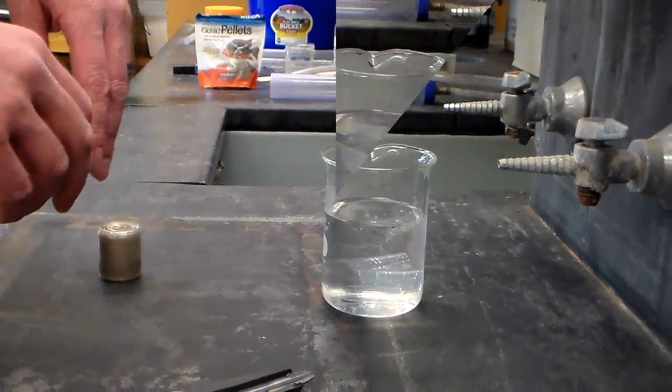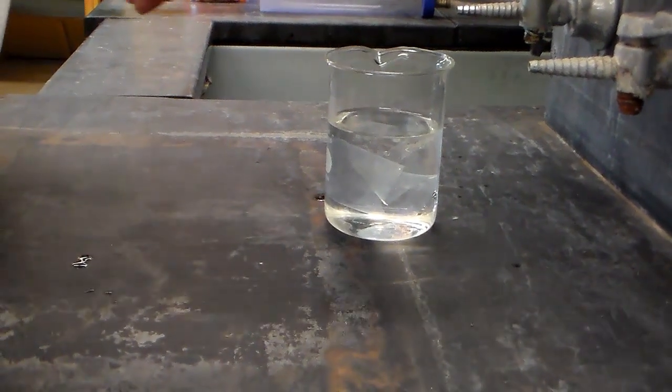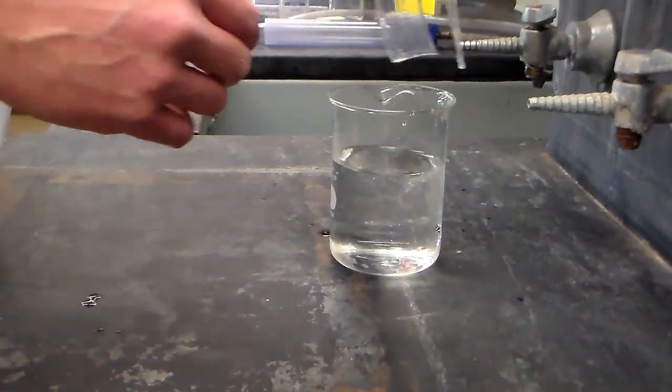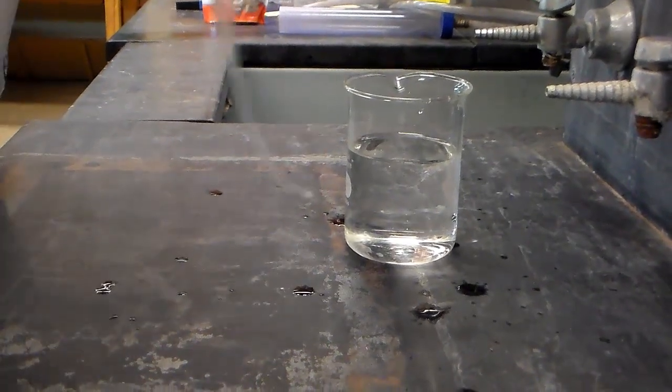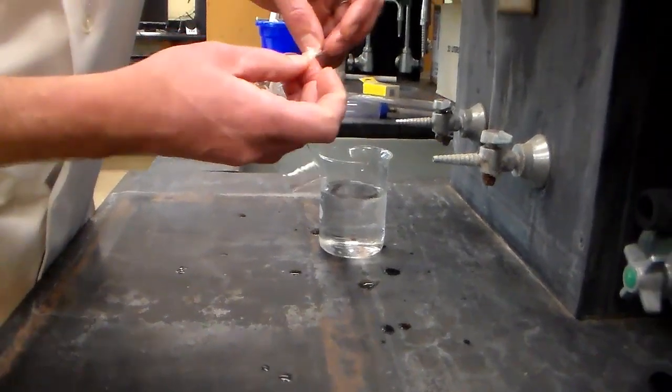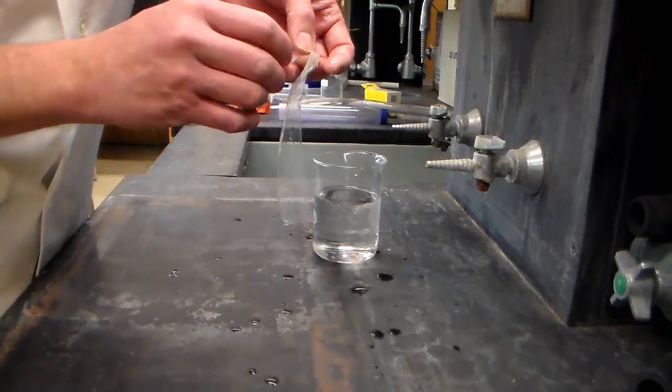Okay, so the tubing has been soaking for a while. You see it's much more pliable, so we want to take one end, bunch it up, and very carefully tie a knot in the end.